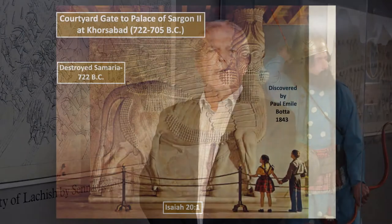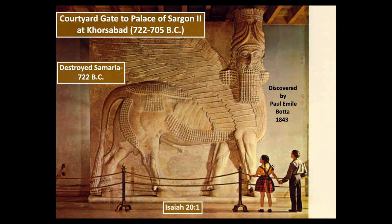Another interesting find is this courtyard gate to the palace of Sargon II at Khorsabad. Sargon II ruled from 722 to 705 BC, and this was discovered by Paul Émile Botta in 1843. Sargon II claims to have destroyed Samaria, the capital of the northern ten tribes of Israel, in 722 BC. For a while there were no known finds of his name anywhere, and so some skeptics doubted that he ever existed. He's mentioned in Isaiah chapter 20 verse 1, and now with these discoveries, confirmation of his existence is widely accepted.